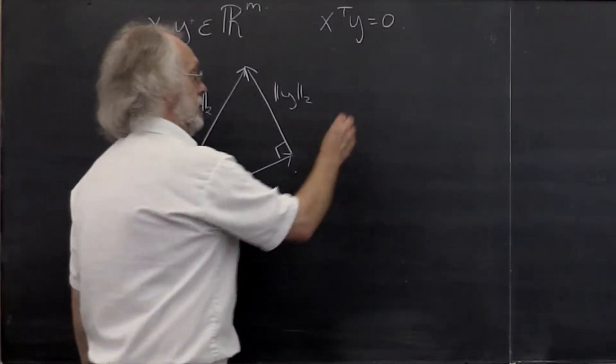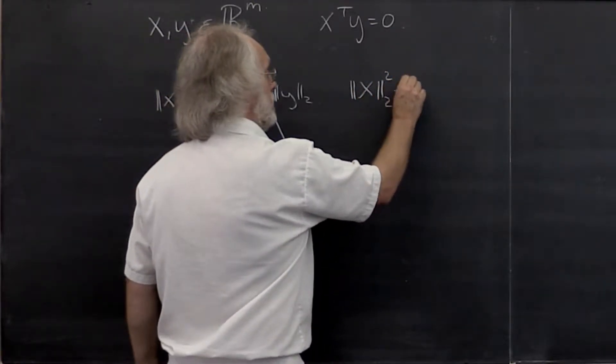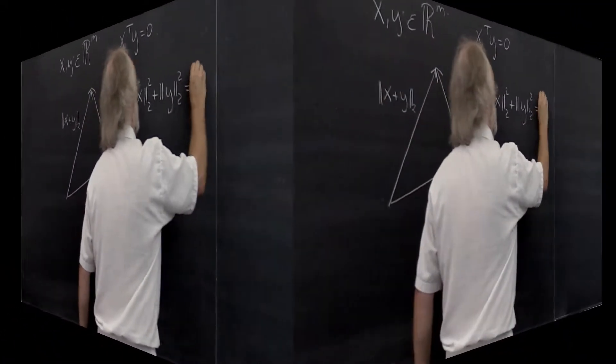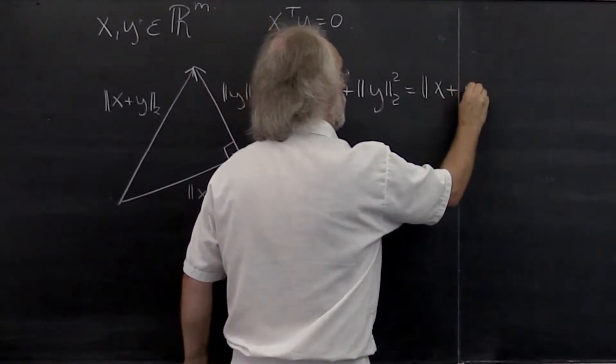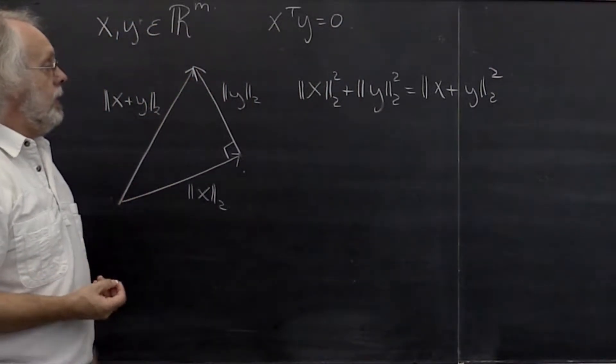What does that mean? The two-norm of x squared plus the two-norm of y squared must be equal to the two-norm of x plus y squared. Let's see what that means about x and y.